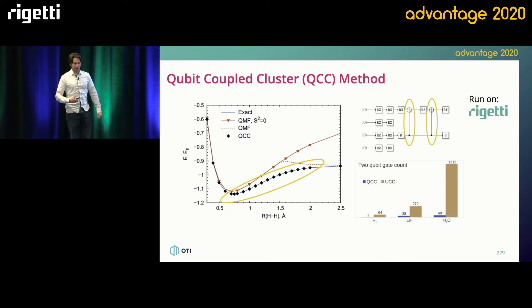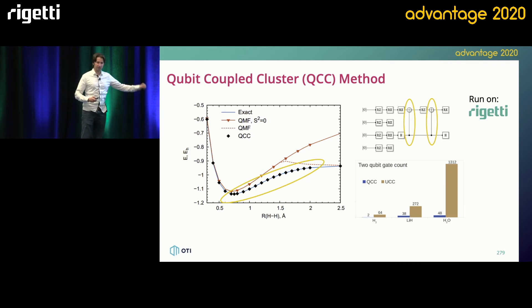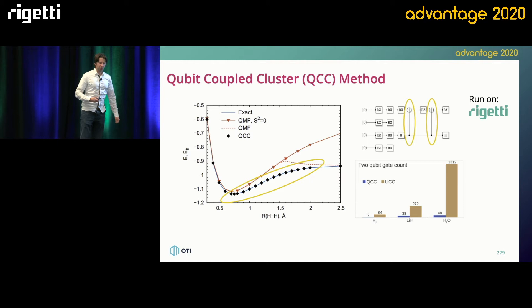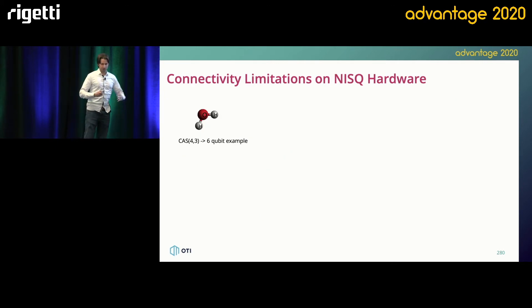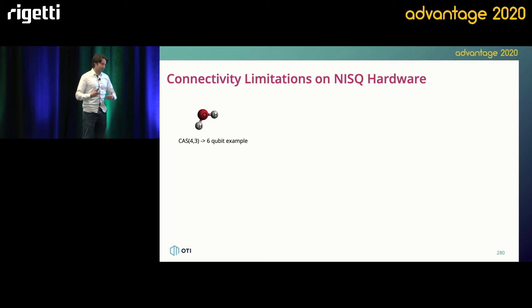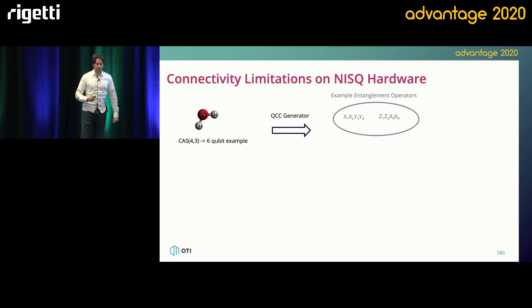We're still looking to improve the compilation, but this simulation was actually done on Rigetti — specifically on the 19q Acorn. However, this doesn't necessarily resolve the full interconnectivity issue, the lack of full connectivity. So what we decided to do is generate what is called an iterative qubit coupled cluster.